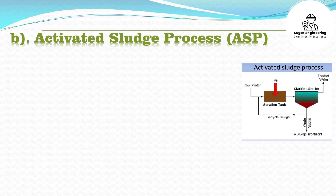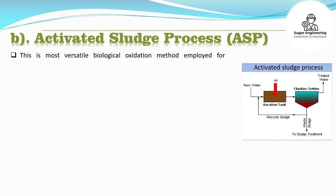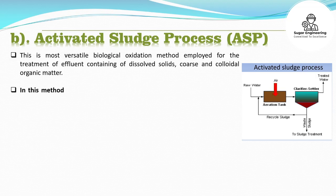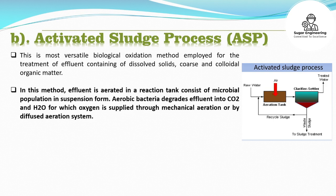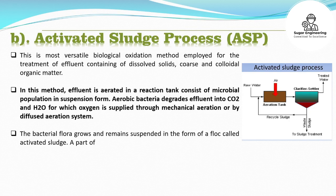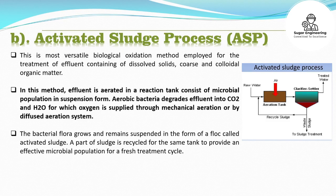Activated sludge process is the most versatile biological oxidation method employed for the treatment of effluent containing dissolved solids, coarse, and colloidal organic matter. In this method, effluent is aerated in a reaction tank consisting of microbial population in suspension form. Aerobic bacteria degrade effluent into CO2 and H2O, for which oxygen is supplied through mechanical aeration or by diffused aeration system. The bacterial flora grows and remains suspended in the form of a flock called activated sludge. A part of sludge is recycled to the same tank to provide an effective microbial population for a fresh treatment cycle.